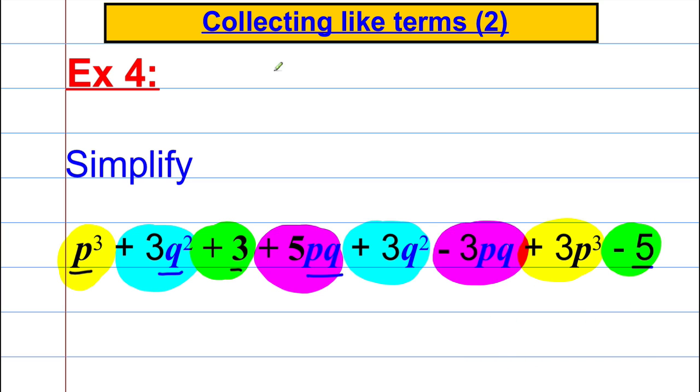Once highlighted like that, your job becomes straightforward. This is identical to 1p cubed plus 3p cubed is 4p cubed. 3q squared plus 3q squared is obviously 6q squared.